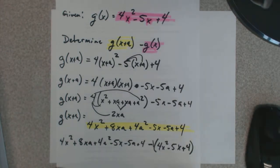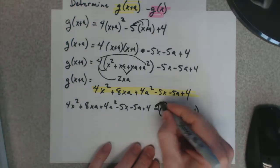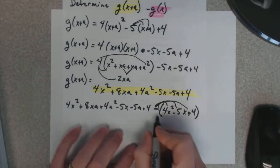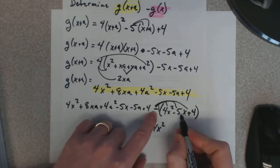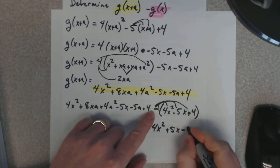Remember, there's a little negative 1 right there. So, everything gets hit by a negative 1. Essentially, what happens is you get a negative 4x squared, a positive 5x, and a negative 4.